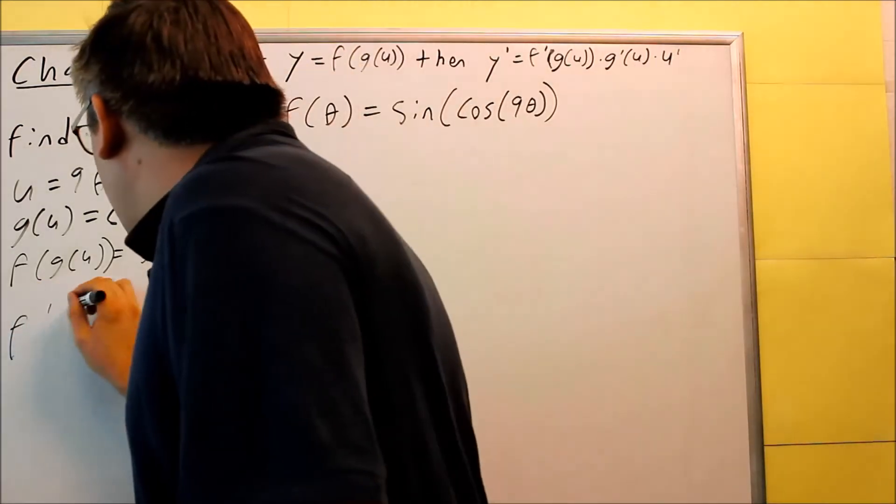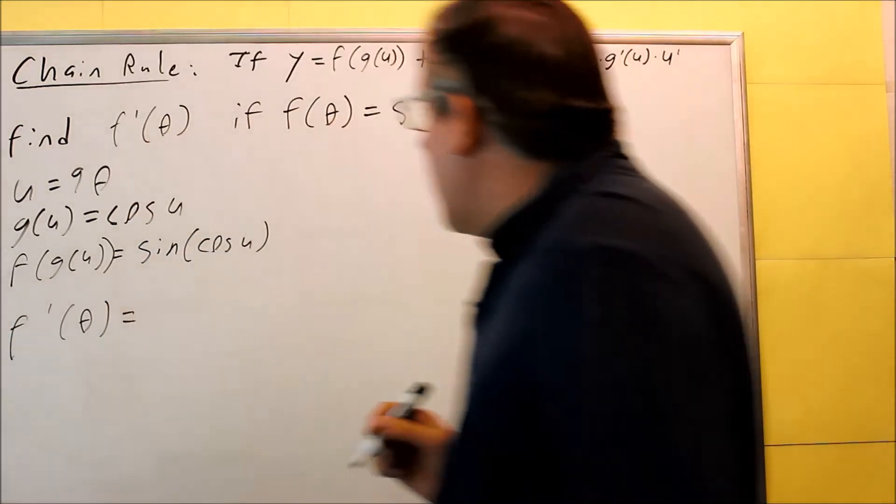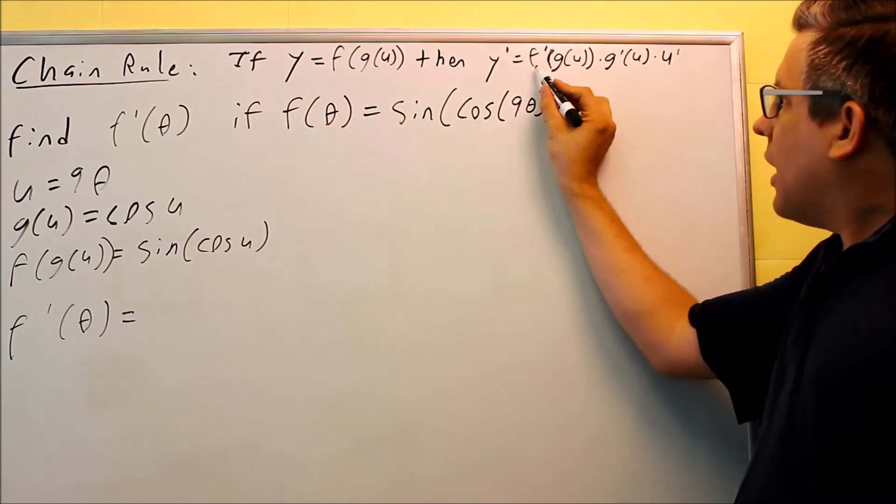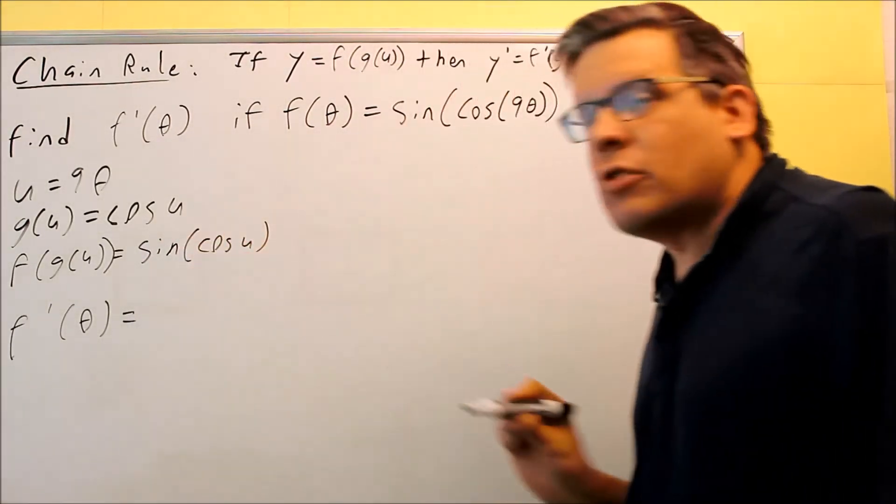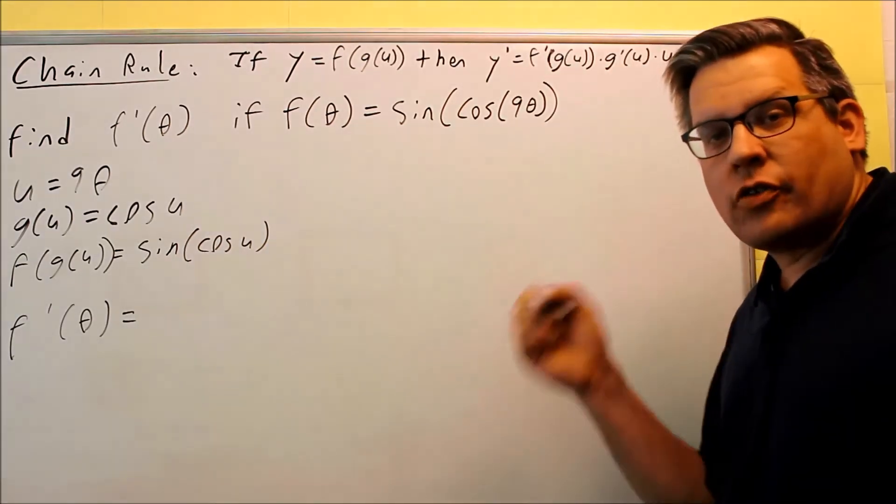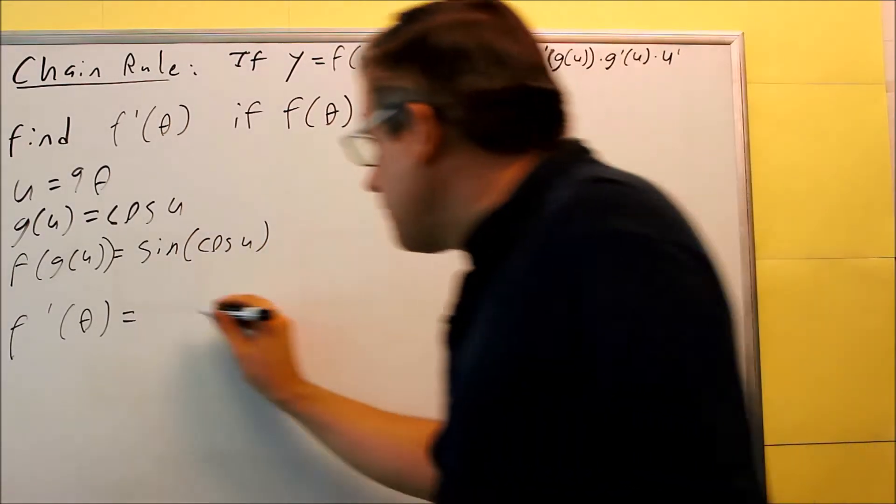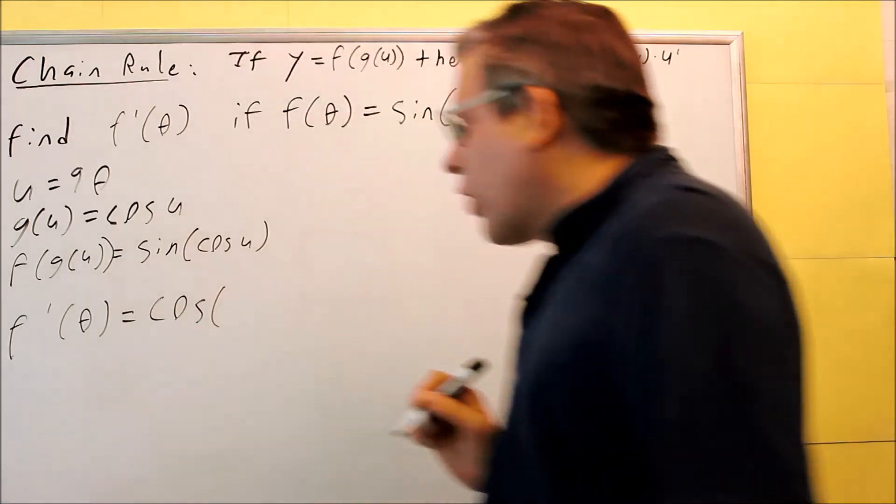So first, f prime of θ, we need to start with f primed of g of u. We want to do the derivative of the outside function, which in this case is going to be sine. The derivative of sine is cosine.